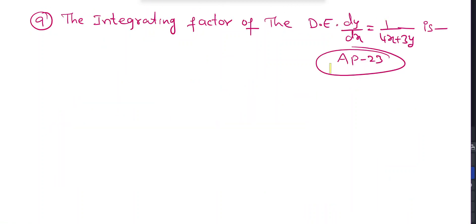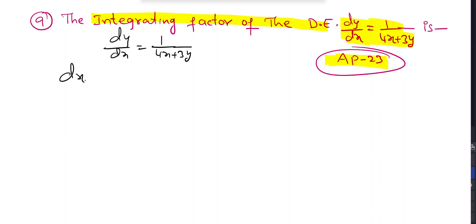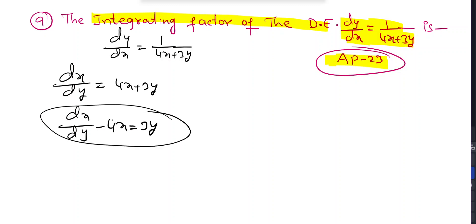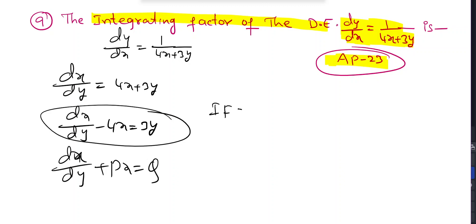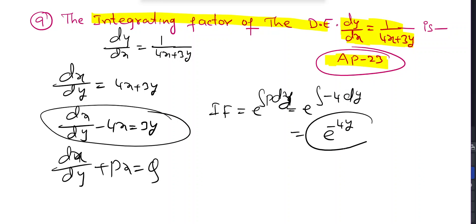This is the next question from AP M-set 2023. The integrating factor of the differential equation dy/dx = 1/(4x + 3y). Writing as dx/dy = 4x + 3y, then dx/dy - 4x = 3y. This is a linear equation in x with P = -4. The integrating factor = e^(∫-4 dy) = e^(-4y).